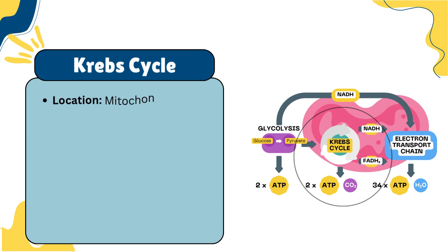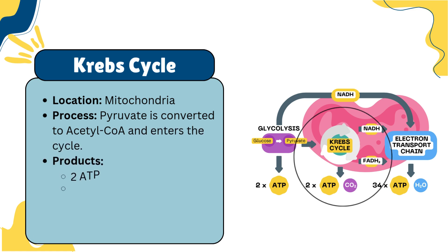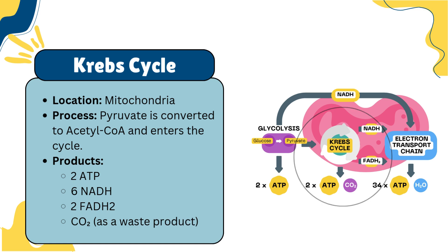Next, we have the Krebs cycle, also known as the citric acid cycle. This occurs in the mitochondria. Here, pyruvate is converted into acetyl-CoA, which enters the cycle. The Krebs cycle generates 2 ATP, along with 6 NADH and 2 FADH2, while releasing carbon dioxide as a waste product.